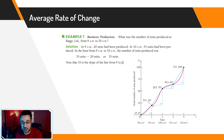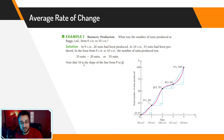Looking at the graph from 9 a.m. to 10 a.m.: at 9 a.m. we have 20 suits produced, and at 10 a.m. we have 55 suits produced. To find how many suits were produced between 9 a.m. and 10 a.m., it makes sense to subtract: 55 minus 20 gives you 35 suits. It's important to note that 35 is also the slope of the line between points P and Q — drawing a straight line between those two points and calculating its slope gives you 35.